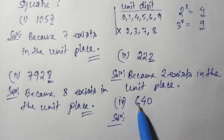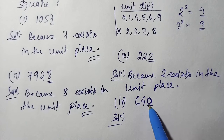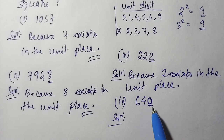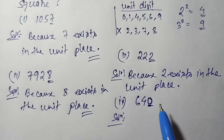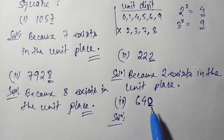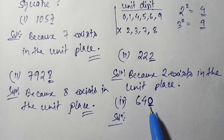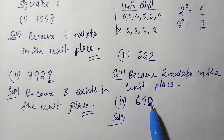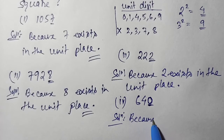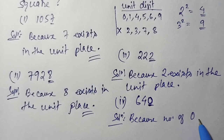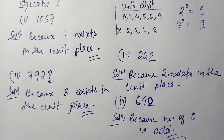Question number 4: the number is 640. Here in the unit place we have 0. To be a perfect square, the number of zeros must be even — it must be 2, 4, 6, 8, and so on. Here we have only one zero, and 1 is an odd number. Since the number of zeros is odd, this number cannot be a perfect square.